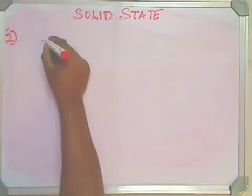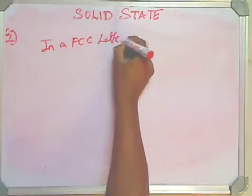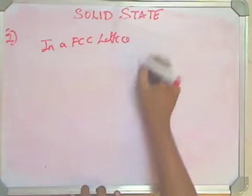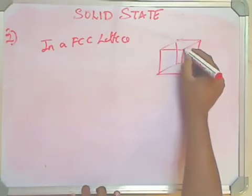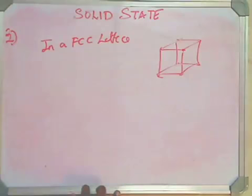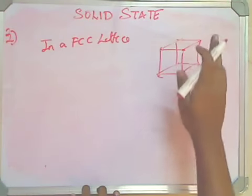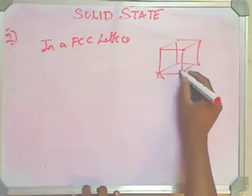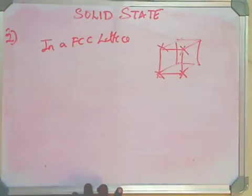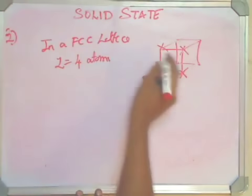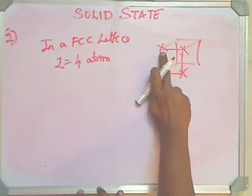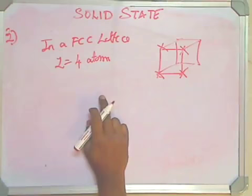In FCC lattice, you have 4 atoms which are present here: 1, 2, 3, and 4. There are more here in these points, but we will not consider them. Put this as an atom, this as an atom, this as an atom, and this as an atom. Like I said, use your imagination and think of atoms being put in places like this. This should give you the value of Z. Z here refers to the 4 atoms, that is the number of atoms present in the structure, in the facing structure: 1, 2, 3, and 4.